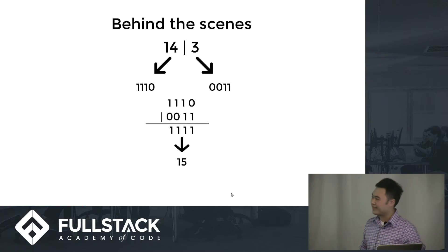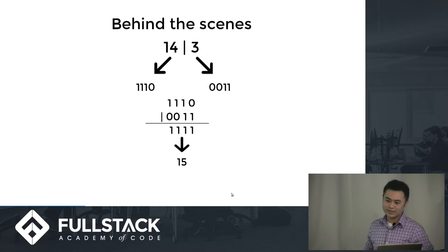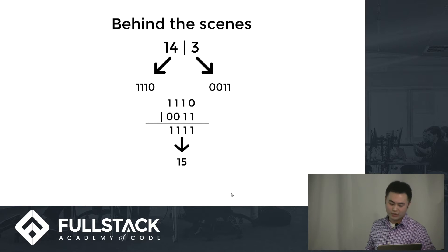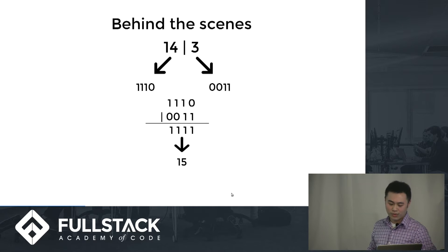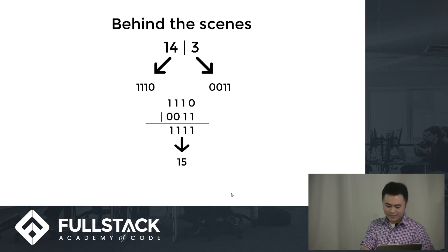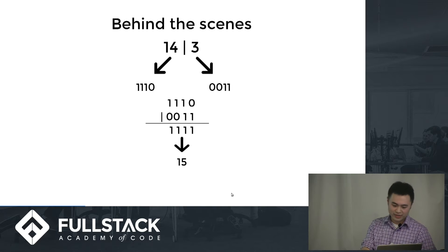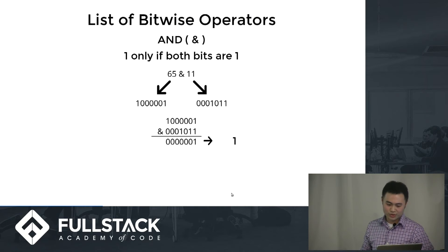So behind the scenes of an OR operation, 14 gets turned into binary — it becomes 1110, and 3 becomes 0011. And when you OR those two together: 0 OR 1 is 1, 1 OR 1 is 1, 1 OR 0 is 1, and 1 OR 0 is 1. So finally you get 1111, which evaluates to 15.